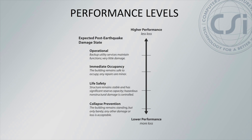These are the various levels of performance and they define what they mean. Operational means backup utility services maintained. Essentially, as you go up the level, your performance is higher, it costs more to build, and the loss is less in an earthquake. As you come lower, it's cheaper to build but you don't perform as well.